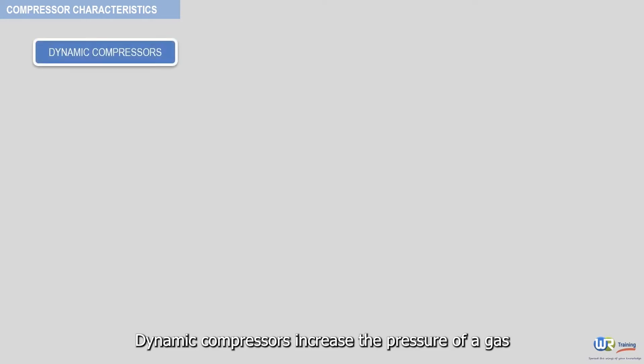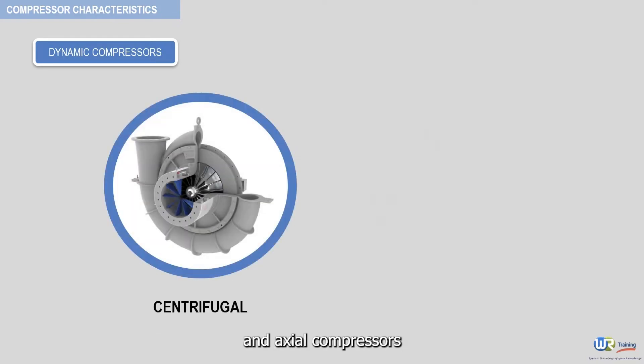Dynamic compressors increase the pressure of a gas by using rotating blades to increase the velocity of the gas. Types include centrifugal and axial compressors.